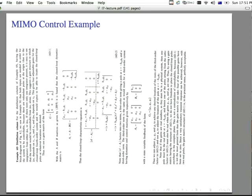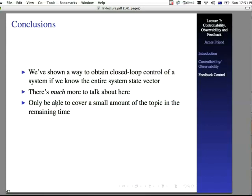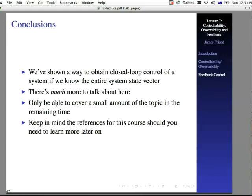This is a MIMO control example, actually, the distillation column again. There's a number of MIMO control examples in Friedland that are related back to missile control and to aircraft control. In conclusion, we've shown you a way to obtain closed-loop control of a system if we know the entire system state vector. And, really, there's much more to talk about here. There's an incredible amount of material in the control of a system using state-space analysis. Because it's such a powerful technique. And it allows you to see things that you cannot in classical control analysis. Really, we'll only be able to cover a small amount of the topic in the remaining time for this course. And I'd like for you to keep in mind the references for this course, should you need to learn more later on. They can save you a lot of hassle. Thank you, and see you for the practical.